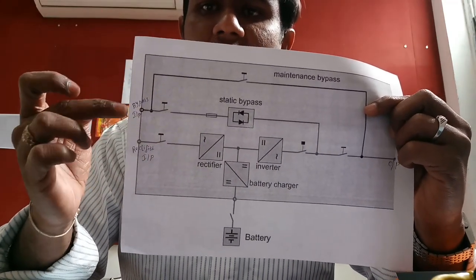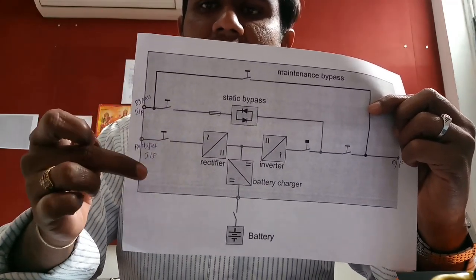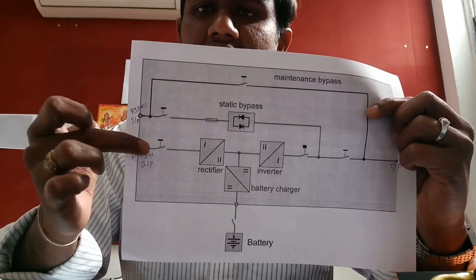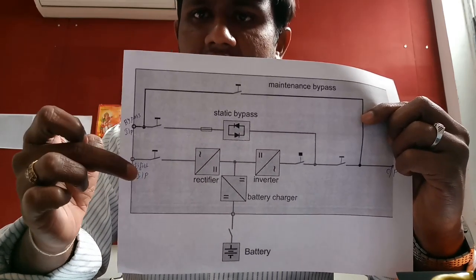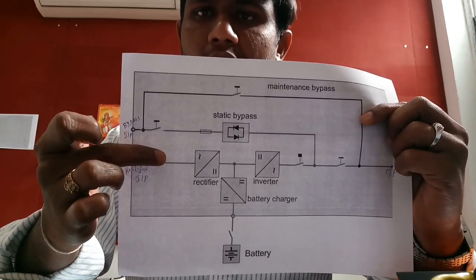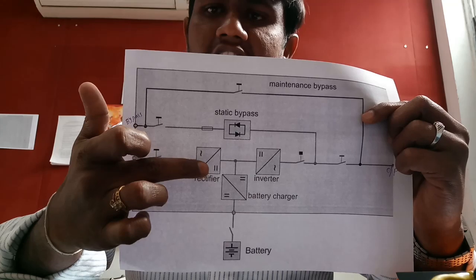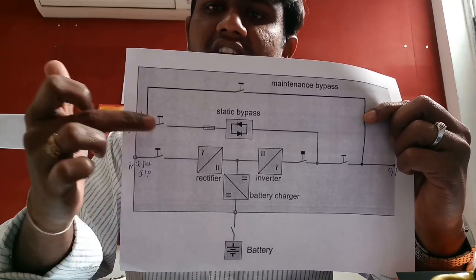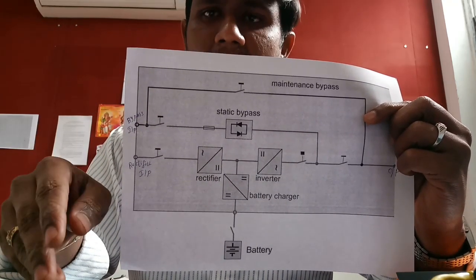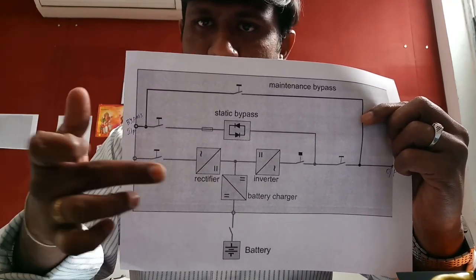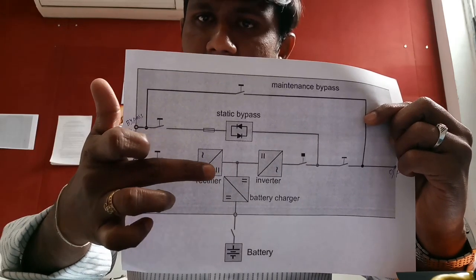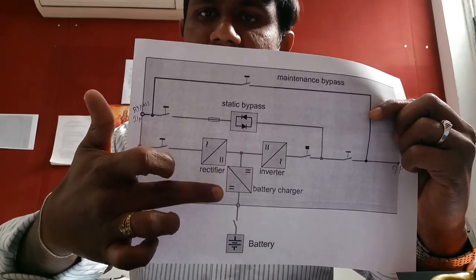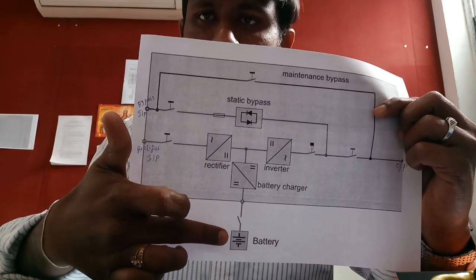Let's look at the operation. The rectifier input is the AC supply. What it does is convert the AC supply to DC supply. Then it will convert and charge the battery charger. The battery charger is stored.